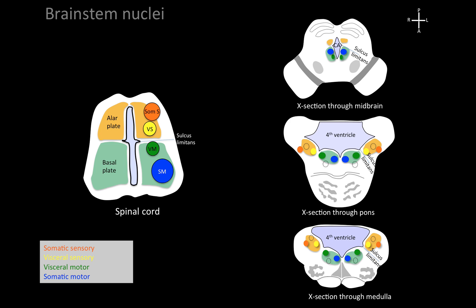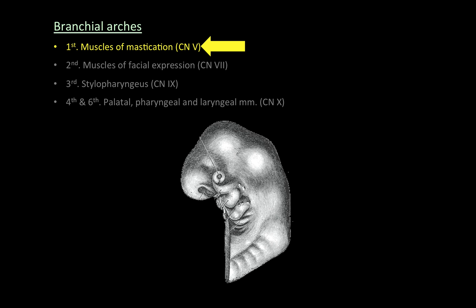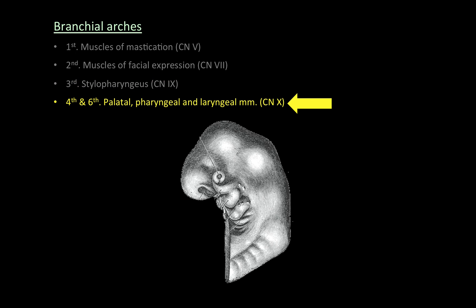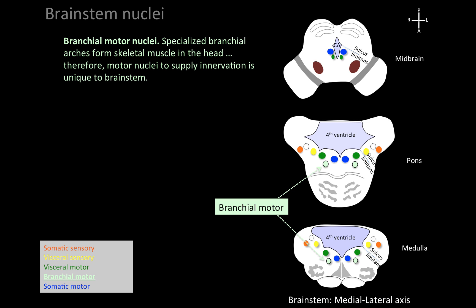We also have dotted nuclei from branchial or pharyngeal arches that are forming. The first branchial arch gives rise to muscles of mastication, the second to muscles of facial expression, the third to the stylopharyngeus muscle, and the fourth and sixth to palatal, pharyngeal, and laryngeal muscles. These skeletal muscles have a special type of neuron called branchial motor nuclei, located just ventral and medial to the other motor nuclei. Branchial motor nuclei are unique to the brainstem — we don't have them in the spinal cord.